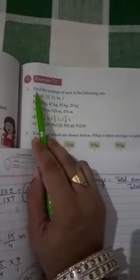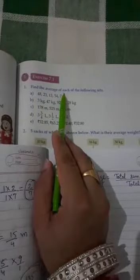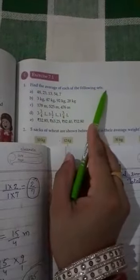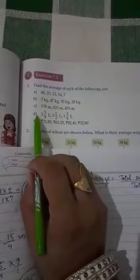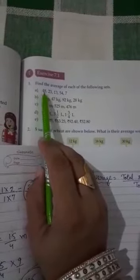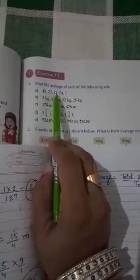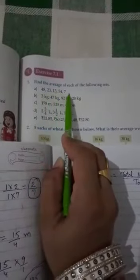Next is exercise 7.1. First part is find the average of each of the following sets. Five sums given. First is 48, 23, 13, 54, 7. These five numbers given.